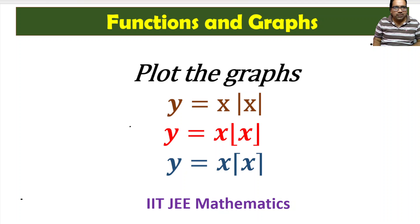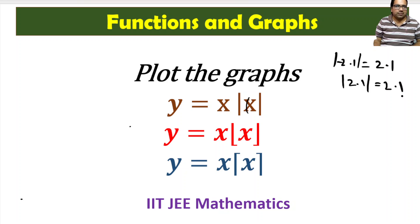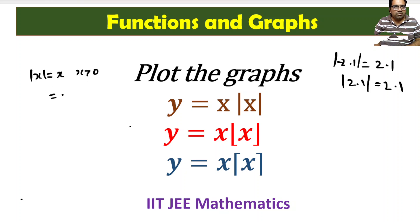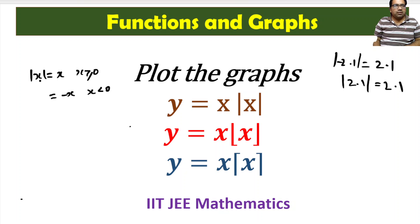Let us first look at y equals x mod x. Mod x gives the absolute value of x. For example, mod of minus 2.1 is equal to 2.1, and mod of 2.1 is also equal to 2.1. So mod x equals x when x is greater than or equal to 0, and mod x equals minus x when x is less than 0. For example, if x is minus 2, then mod x is minus of minus 2, which is plus 2.